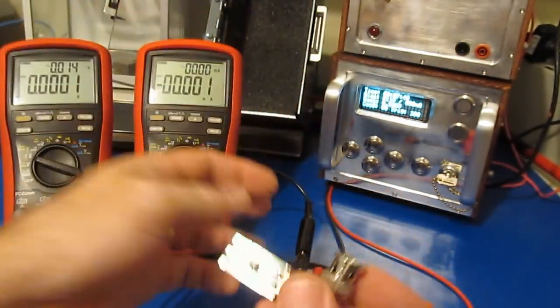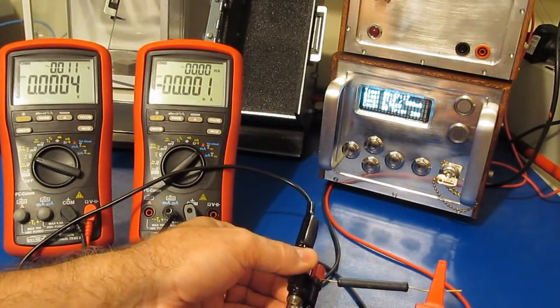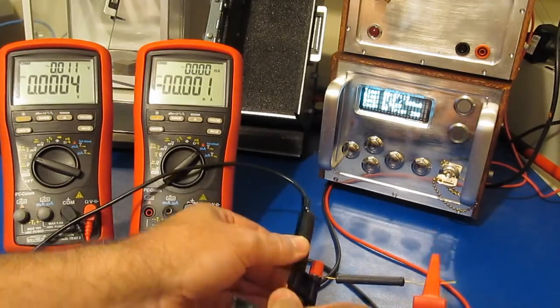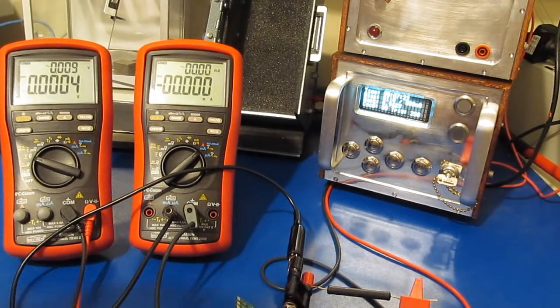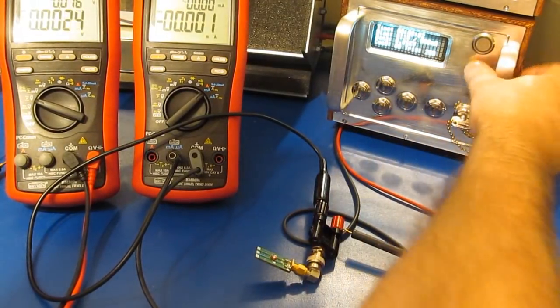Let's just try the same test with our unknown device. Again, if this is a gas discharge tube, which I suspect it is, it should emit some light. And go ahead and turn on the generator.